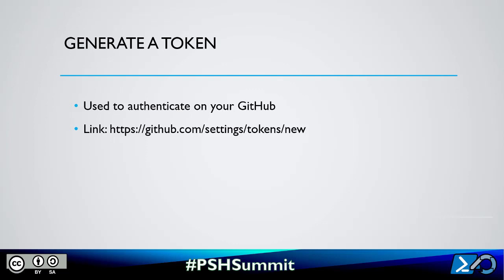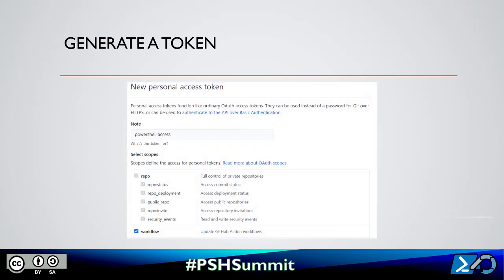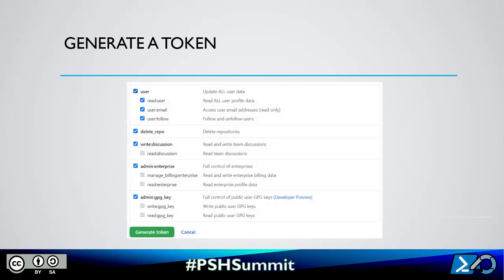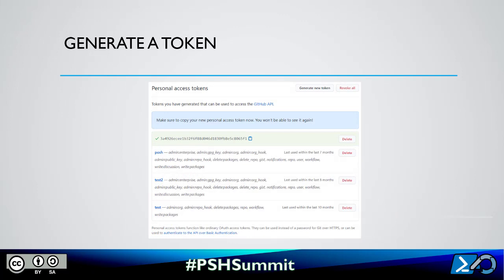To get information about the authenticated user, we have to authenticate. To authenticate, we will use a token. To create a token, just go to your GitHub account settings. From there you are able to create a token. Give a name to your token, then select a scope in which your token will be able to run. In my case, I select everything. Then just click on 'Generate token' and it will give you the token ID. Don't forget to copy it, because you won't be able to see it again.